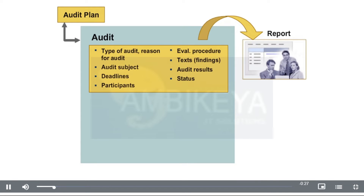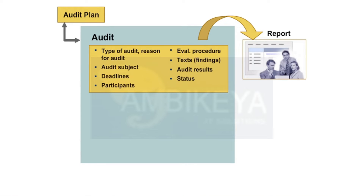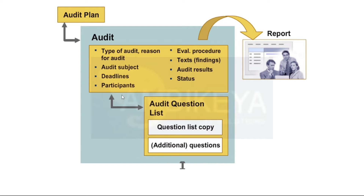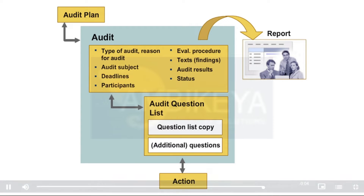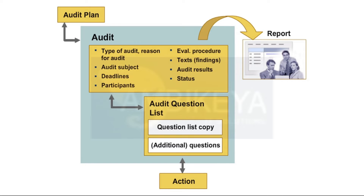By defining audit objects, you are able to analyze comparable audits and determine best practice or trends. The audit object is described by a definable group of fields, and allowed values for these fields can be entered into customizing tables as required. The audit data object is also used during the execution of the audit; for this, a question list is added to the audit, and the valuation of questions is considered in this list of audit questions.